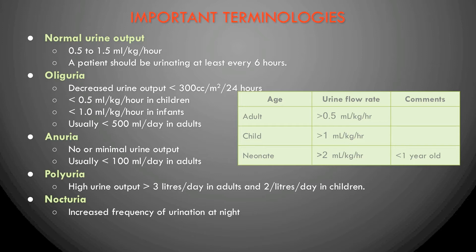Anuria is very minimal urine output — less than 100 ml per day. Polyuria is when urine output is high: greater than or equal to 3 liters per day in adults and 2 liters per day in children.